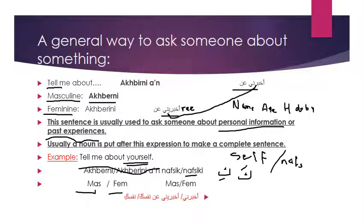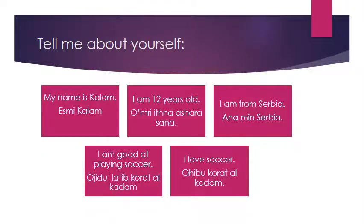To summarize: a general way to ask about something is 'Tell me about,' which is أخبرني عن for the masculine and أخبريني عن for the feminine. 'Tell me about yourself' is أخبرني عن نفسك or أخبريني عن نفسك. You are asking them to give you personal information about themselves.